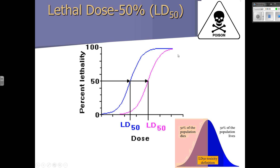There are also other measures — we've looked at LD75, which isn't in your textbook. For the LD75, 75% of the test population has been killed. You would go between 50 and 100, find 75, go over to your line and go down. But we're really focusing on the LD50 here.